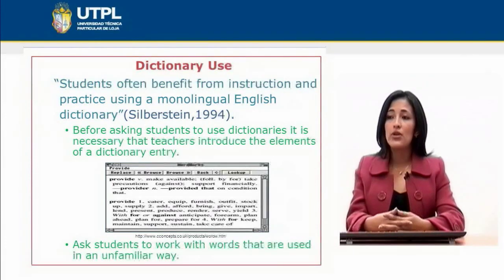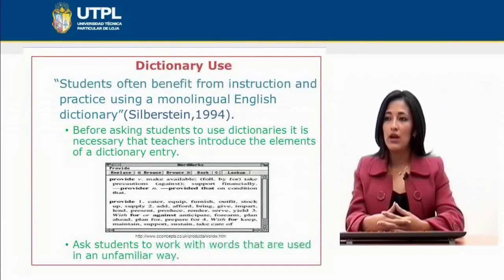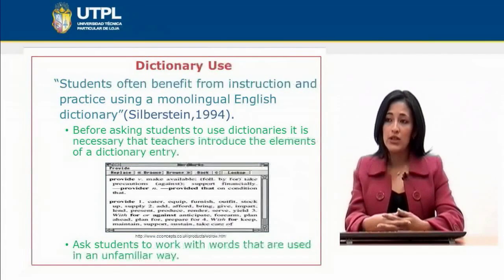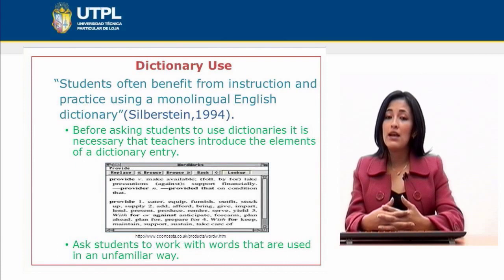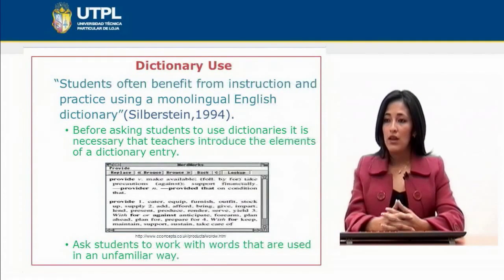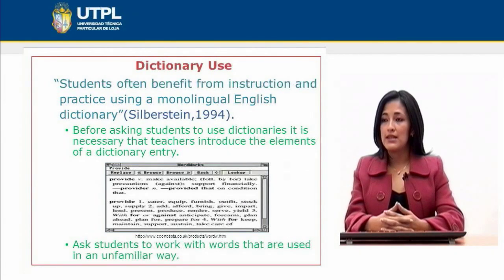Each word included in a dictionary has different functions. For example, here we have the word 'provide,' which functions as a verb and also as a noun. Here we also have the meaning of each word according to the function it has. In other dictionaries we also find examples of using those words according to the function. So it is important to make our students first identify which elements the dictionary contains.